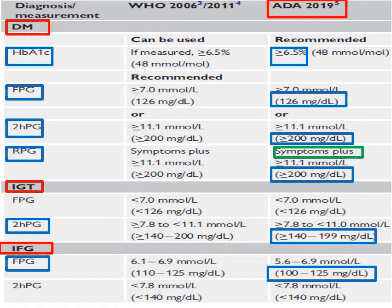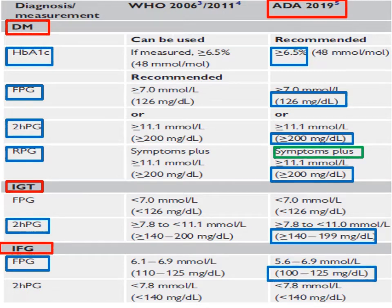How to diagnose diabetes mellitus? According to the American Diabetes Association 2019 guidelines, we can diagnose diabetes mellitus by any of the following: hemoglobin A1c 6.5% or more; fasting blood glucose 126 mg per deciliter on two separate occasions; 2-hour post-prandial blood glucose 200 mg per deciliter or more on two separate occasions; or random blood glucose 200 mg per deciliter or more in presence of symptoms such as polyuria, polydipsia, polyphagia, or loss of weight.